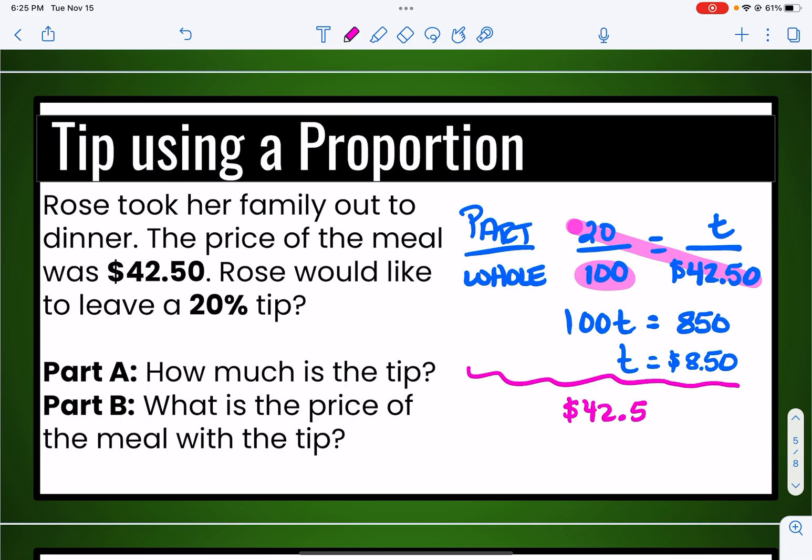So $42.50 plus the $8.50 we're going to have for the tip. Now remember, whenever you're adding decimals, you're going to line them up like little buttons on a shirt. And if we go from the right to the left, we will see that Rose is going to need to leave a total of $51 if she wants to have the price of the meal and the tip. So that's the first way. So that's the way of using a proportion to calculate the gratuity.